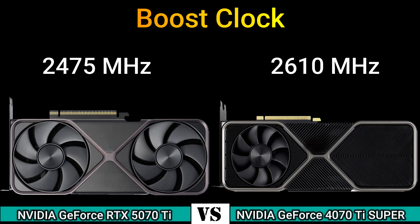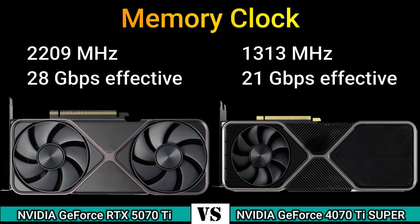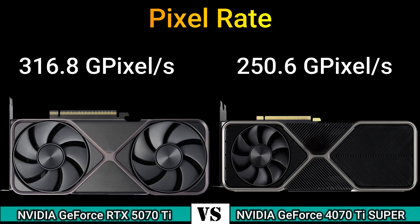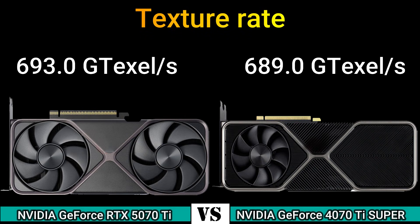Memory clock: 2209 MHz (28 Gbps effective) and 1313 MHz (20 Gbps effective). Pixel rate: 316.8 GPixel/s and 250.6 GPixel/s. Texture rate: 693.0 GTexel/s and 689.0 GTexel/s.